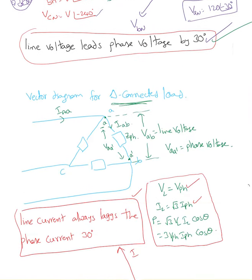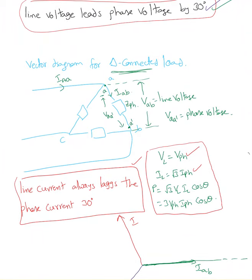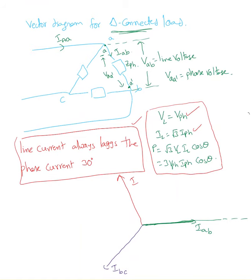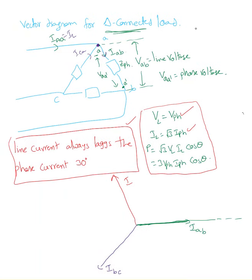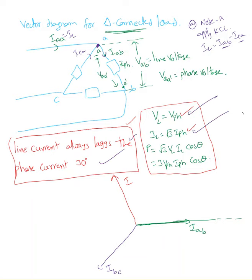For a delta-connected load, three important points apply. First: VL equals VPH — line voltage equals phase voltage. Second: IL equals square root of 3 times IPH. Applying KCL at node A, line current equals IAB minus ICA, so line current is always larger than phase current. Third: line current always lags the phase current. These three points must come to mind whenever you see a delta load or source.